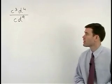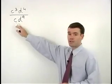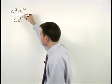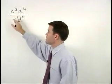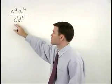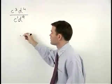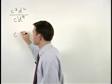As your first step here, I would change the C in the denominator to a C to the first. So when you divide C to the third by C to the first, we subtract 3 minus 1 to get C squared.